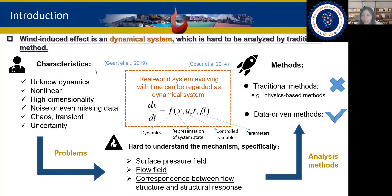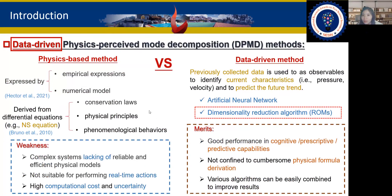The wind-induced effect is an autonomous dynamic system, which can be expressed by these equations. However, this dynamic system is hard to analyze by traditional physics-based methods due to its intrinsic characteristics, such as nonlinearity and high dimensionality. So in order to understand the mechanism of wind-induced effect, data-driven methods are a more preferable way. In my study, the data-driven physics-perceived mode decomposition (DPMD) methods are used to solve the dynamic system.